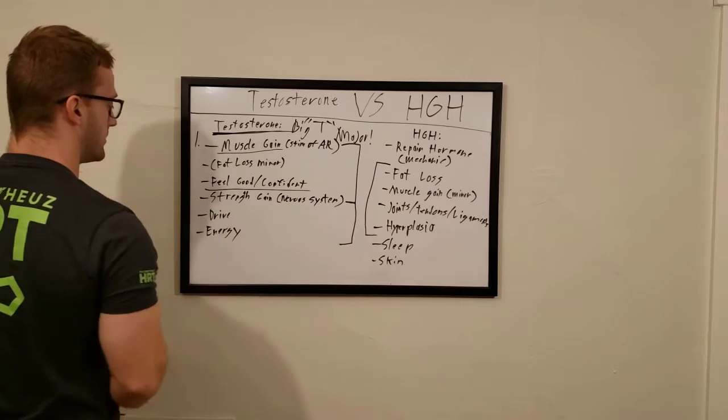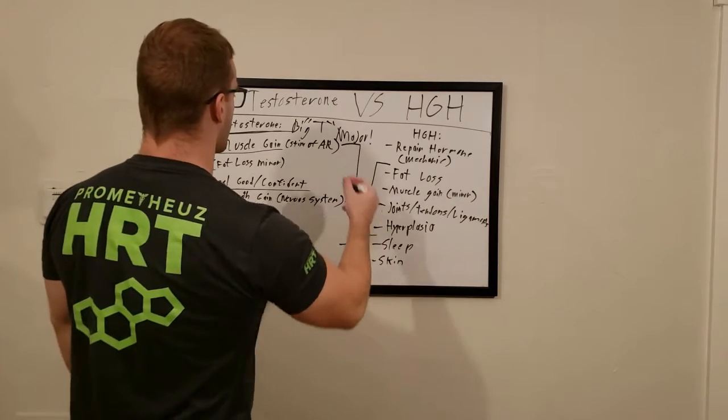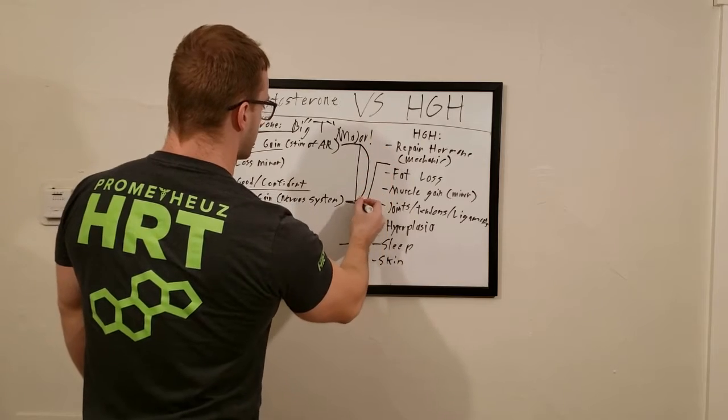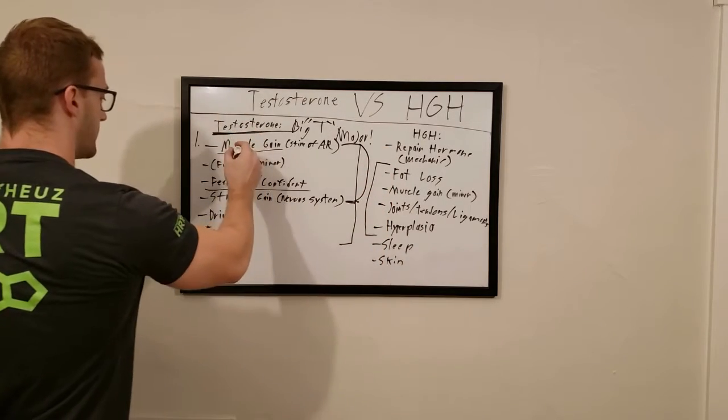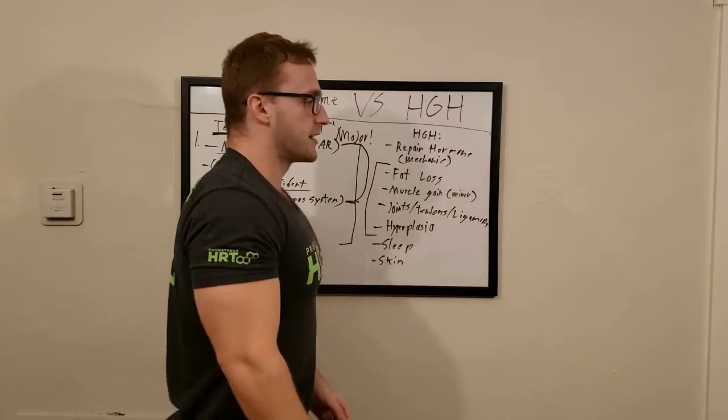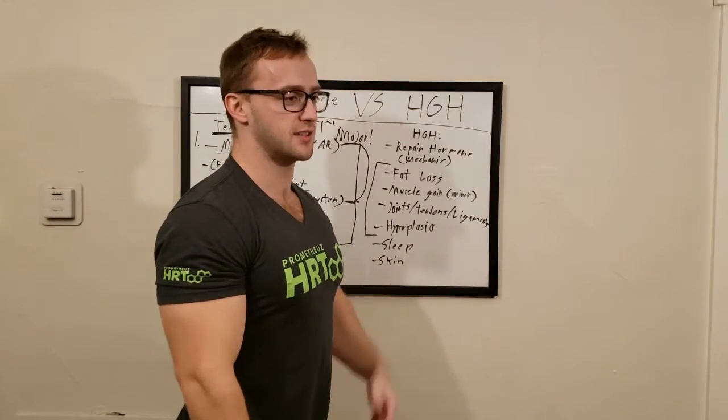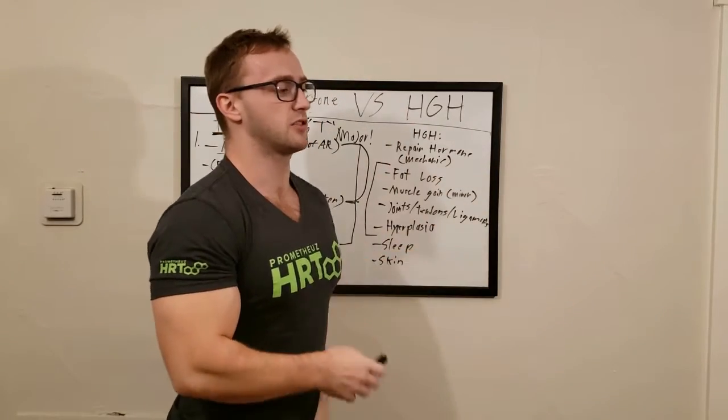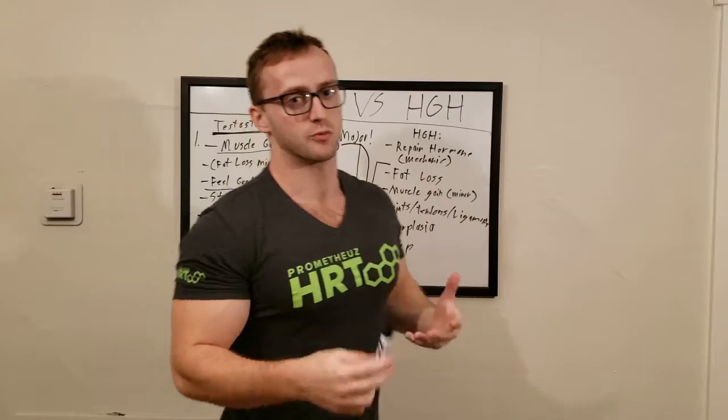Testosterone - strength gain. Again, this is a major effect of testosterone. Muscle gain, we've talked about that, also strength gain. Testosterone will bind onto androgen receptor sites in the brain and the primary nervous system and increase basically the available nervous system response. Think stronger electrical signals in general, creating a stronger contraction. You're able to push harder, push longer, and just take more.